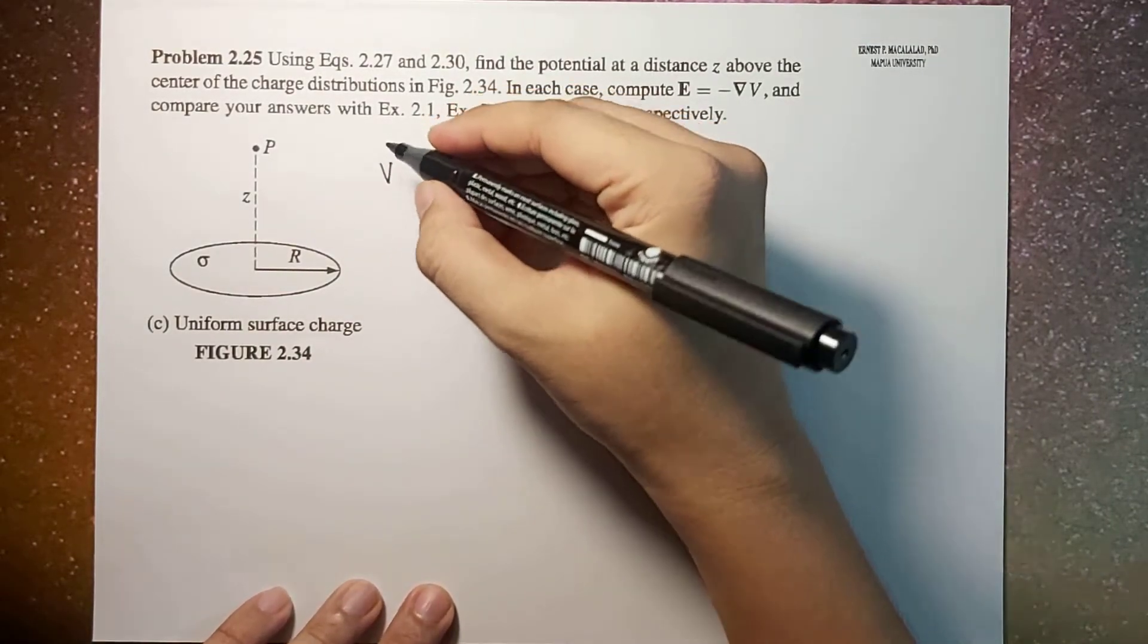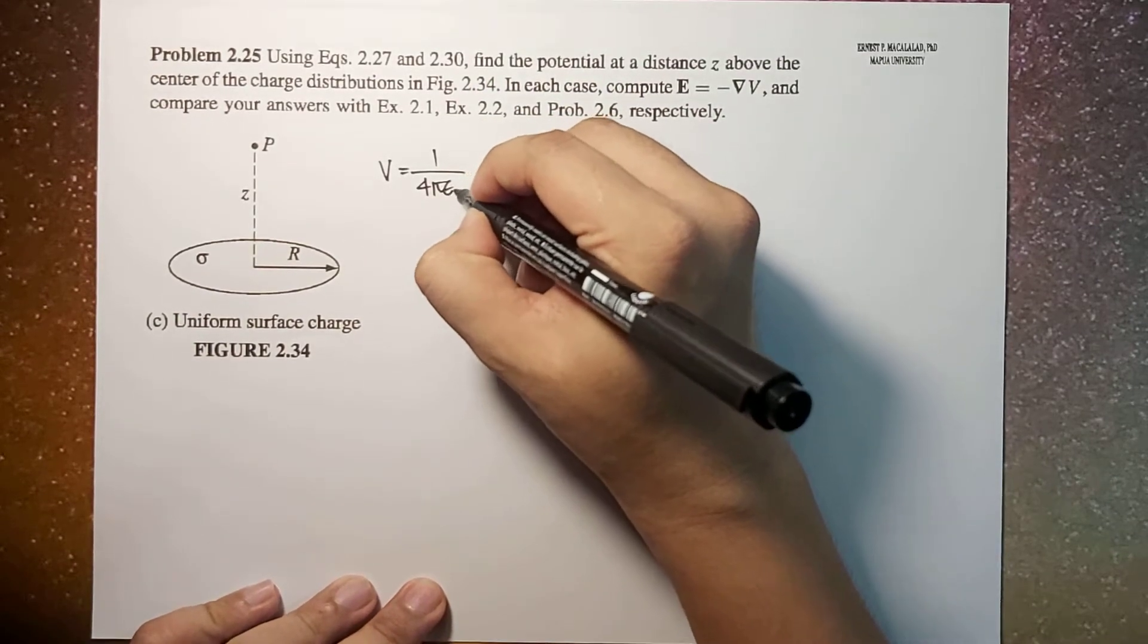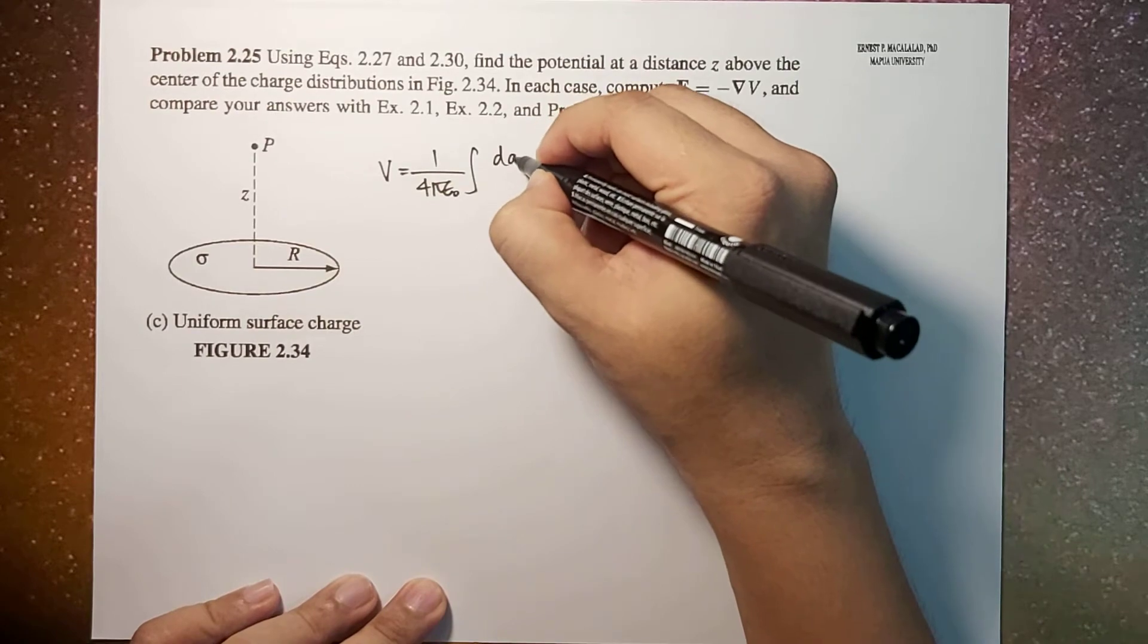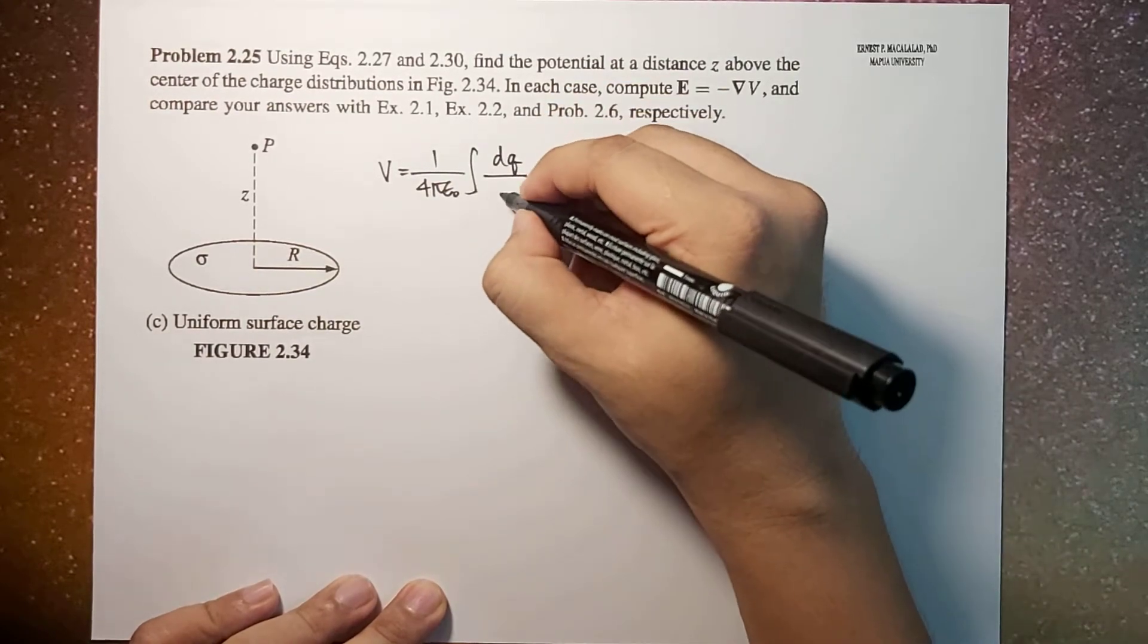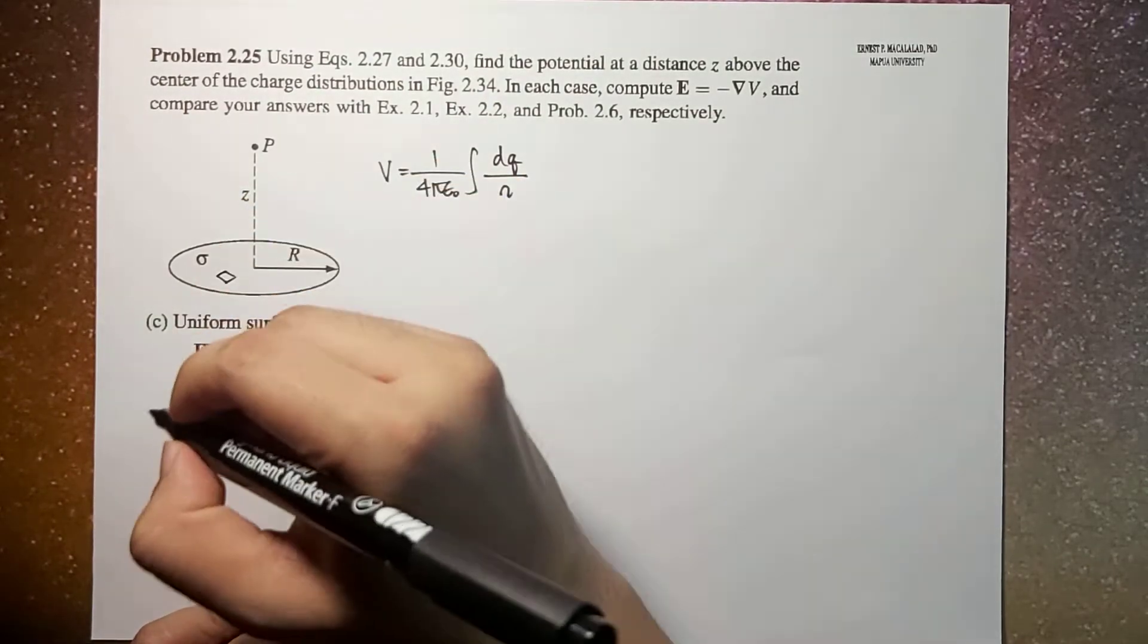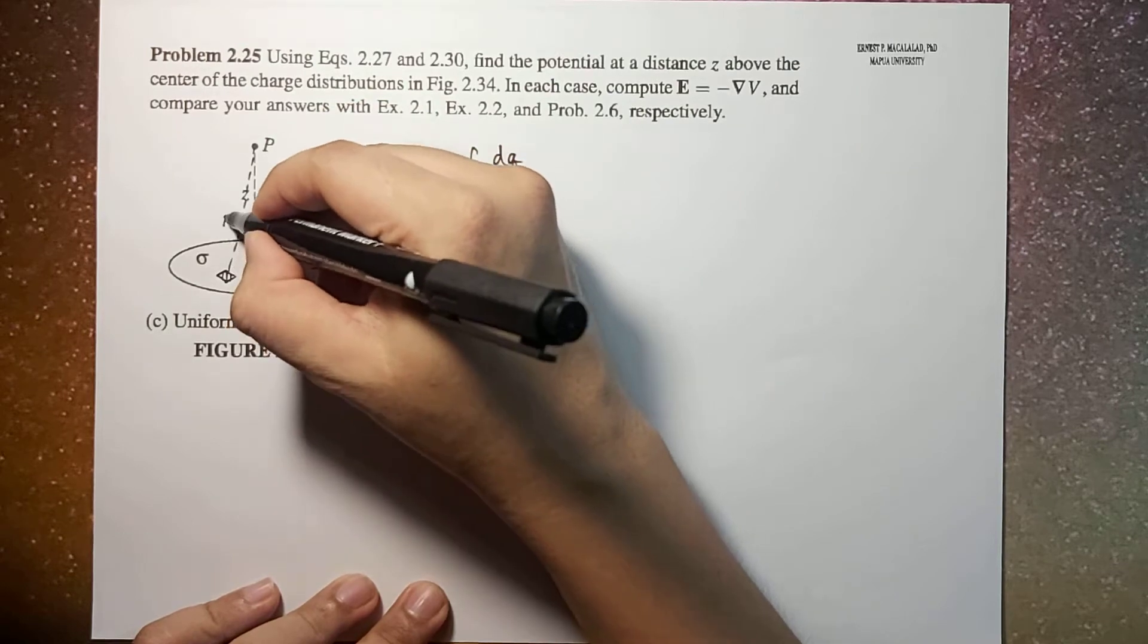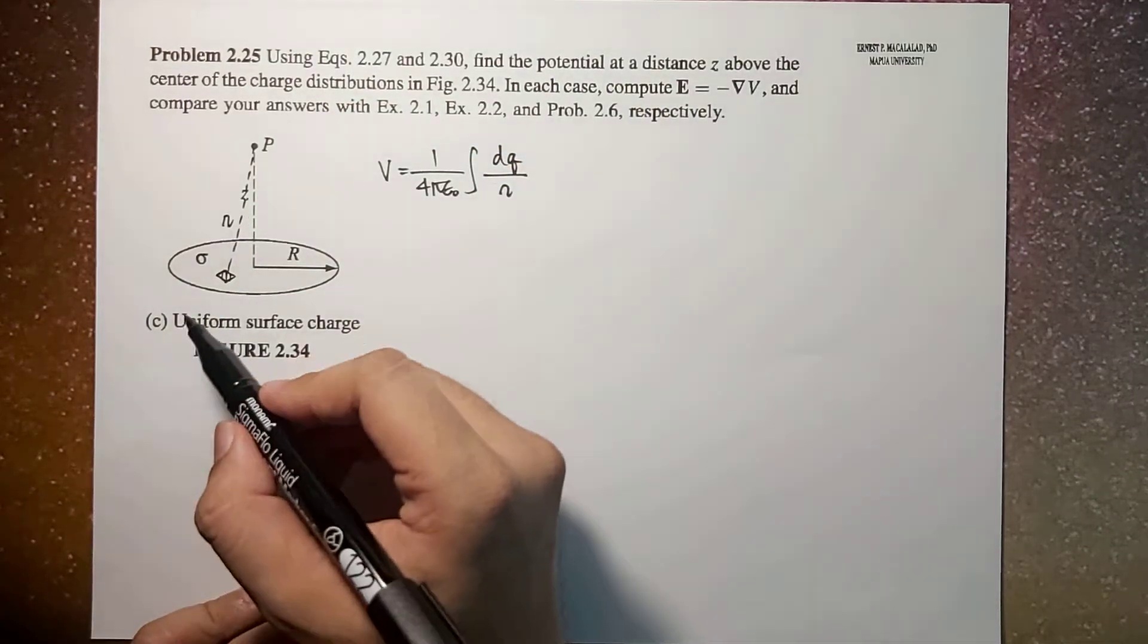Because this is a continuous charge distribution, the potential will be equal to 1 over 4π epsilon 0 times integral of dq with respect to r. So if this is for example your dq, this will be your script r.